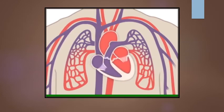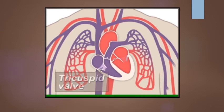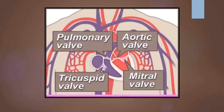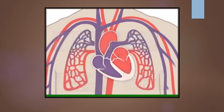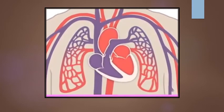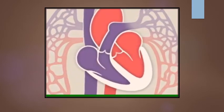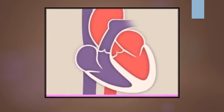Four valves within your heart keep your blood moving the right way. The tricuspid, mitral, pulmonary, and aortic valves work like gates on a fence. They open only one way and only when pushed on. Each valve opens and closes once per heartbeat, or about once every second.